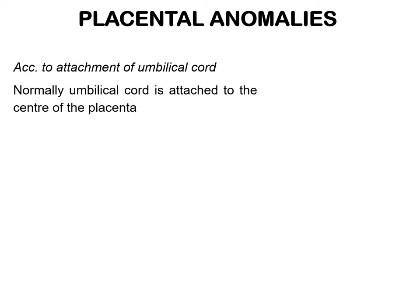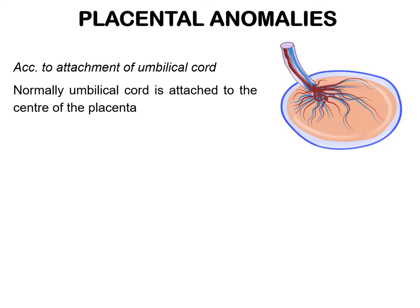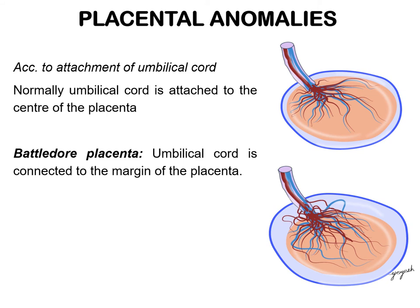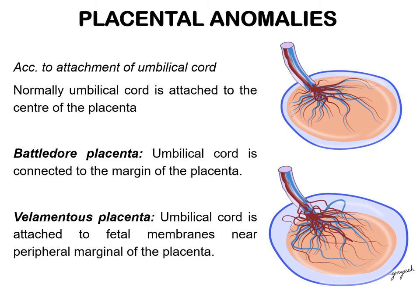The placenta shows a number of anomalies. Normally, the umbilical cord is attached to the center of the fetal surface of the placenta. If the attachment is towards the margin, it is known as battledore placenta. Sometimes, the umbilical cord may be attached to the amnion and chorion at the margin of the placenta, and the umbilical vessels then branch between the membranes before entering the placenta. This is known as velamentous or furcate placenta.